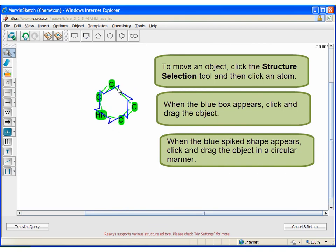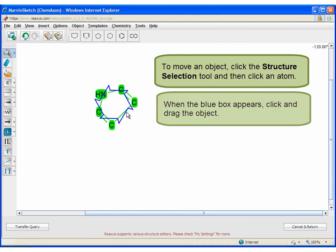When the blue spiked shape appears, click and drag the object in a circular manner.